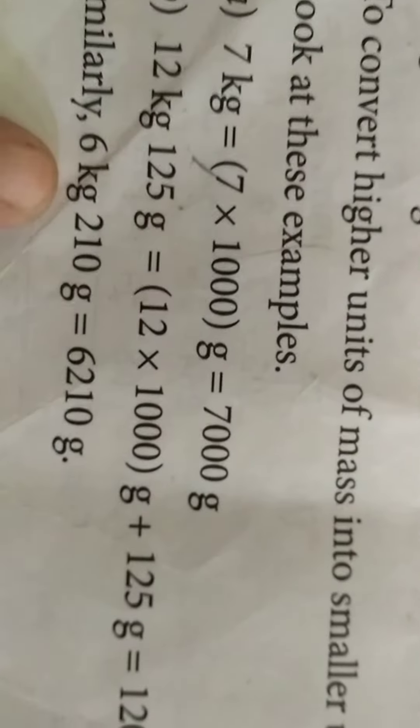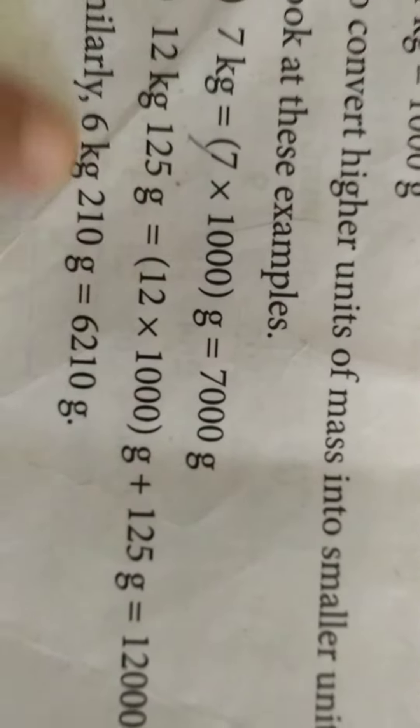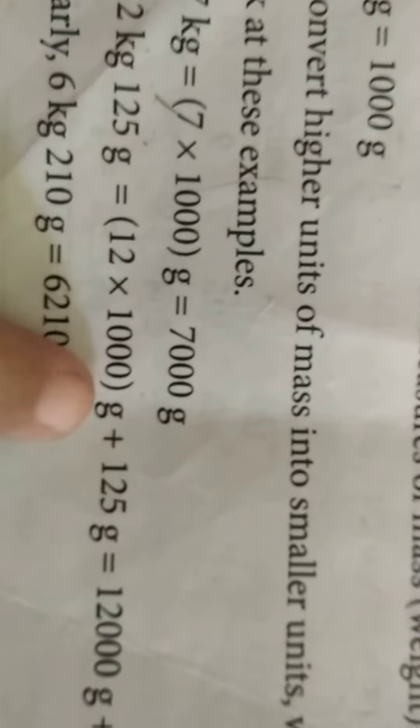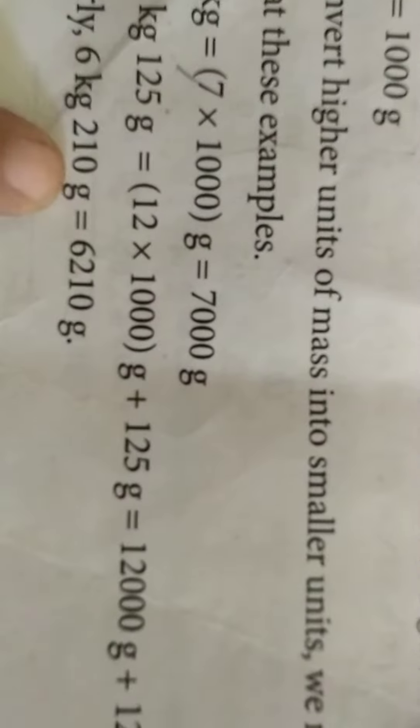Similarly, 6 kg 210 grams: 6 times 1000 grams is 6000 grams, plus 210 grams equals 6210 grams.